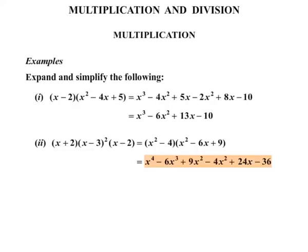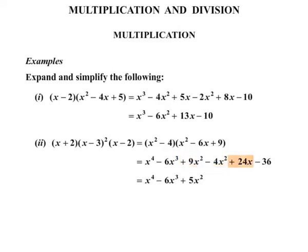We need to collect like terms. We've got x to the 4 — no other x to the 4s. We've got minus 6x cubed — nothing else in terms of x cubed. We've got a few x squareds: 9x squared minus 4x squared gives plus 5x squared. Plus 24x, and then minus 36.